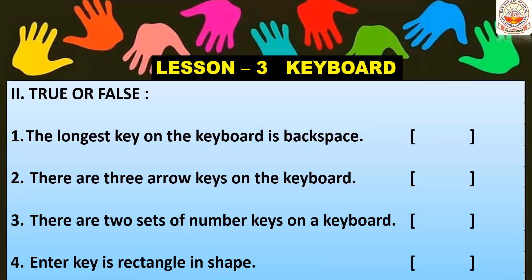Now true or false. The longest key on the keyboard is backspace — false, the longest key is the space bar, not backspace. There are three arrow keys on a keyboard — false, there are four arrow keys.